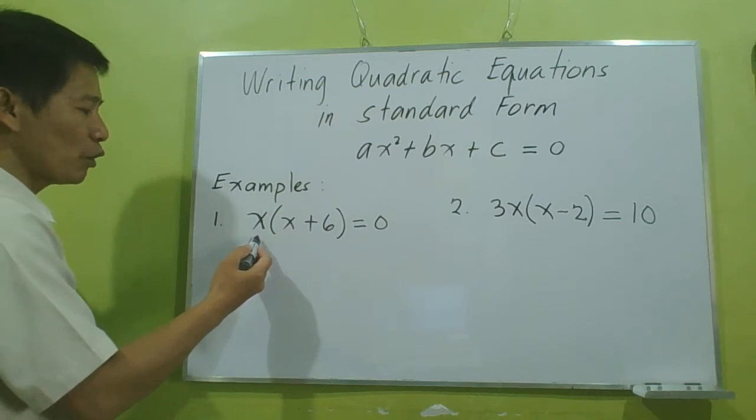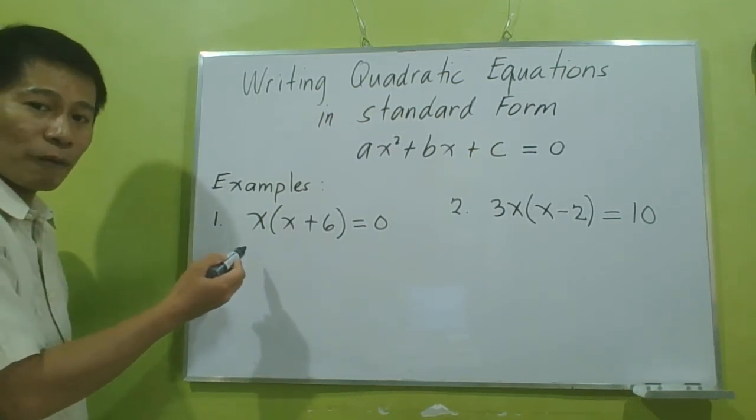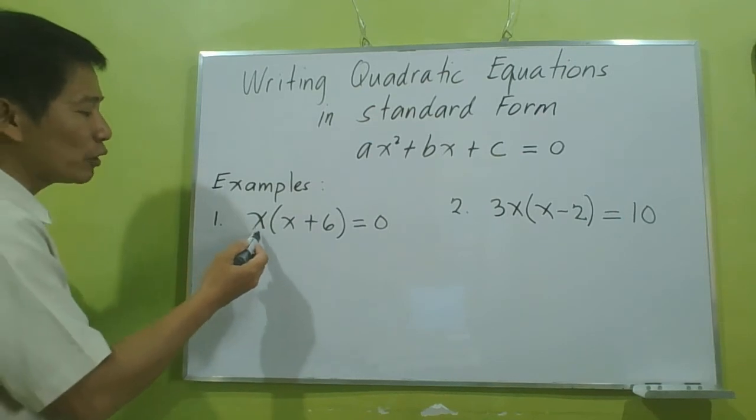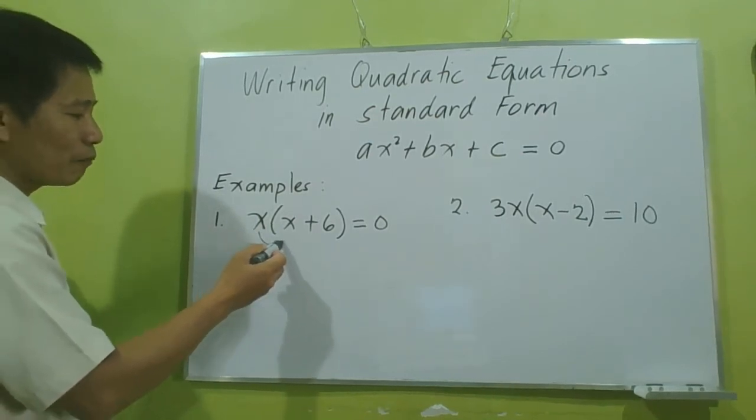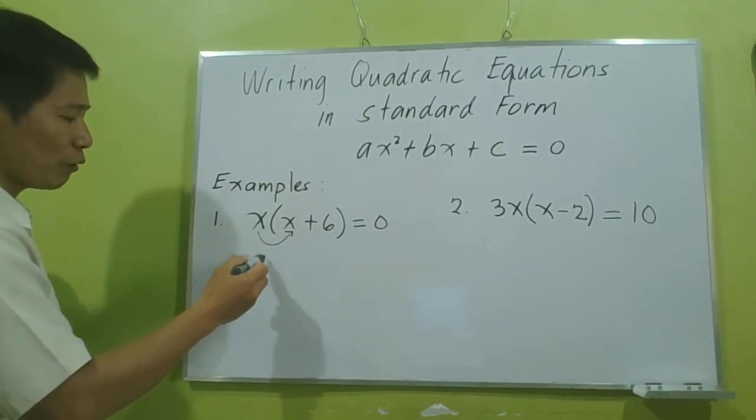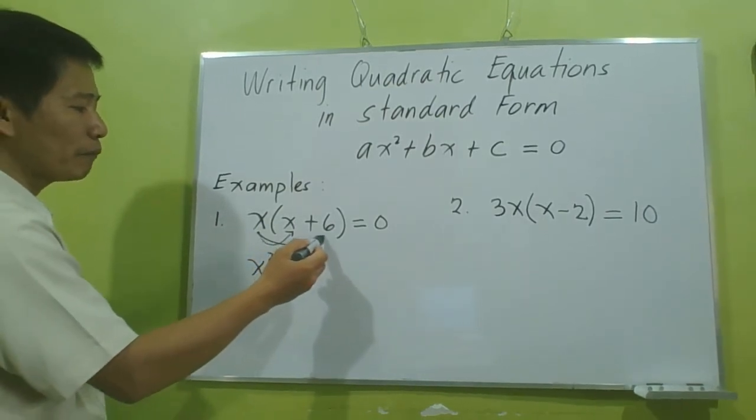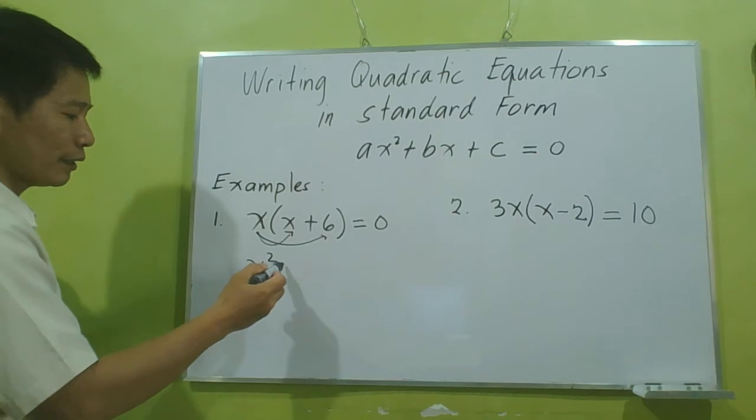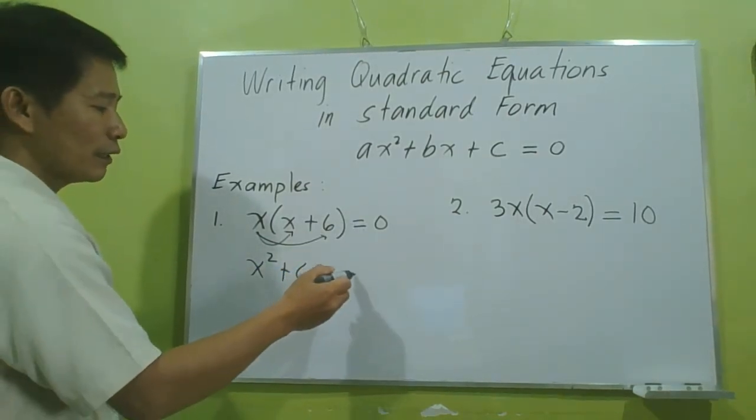How are we going to simplify this? We will use the distributive property. We multiply x by x: x times x equals x². Then x multiplied by positive 6 equals positive 6x. So we have x² + 6x = 0.